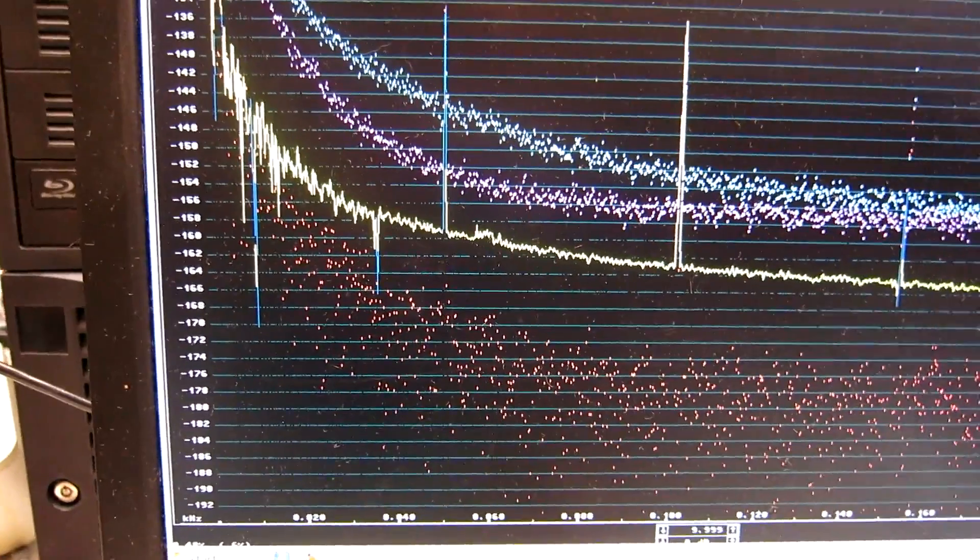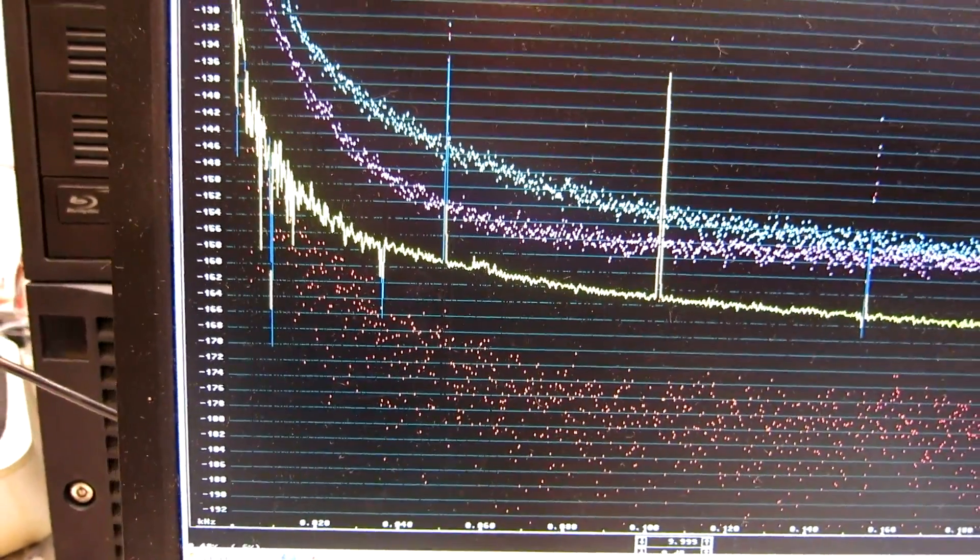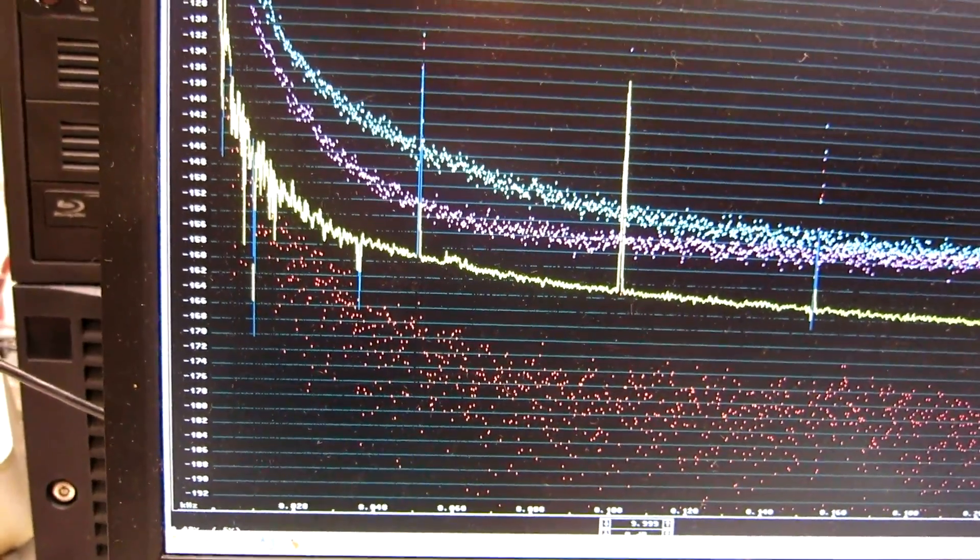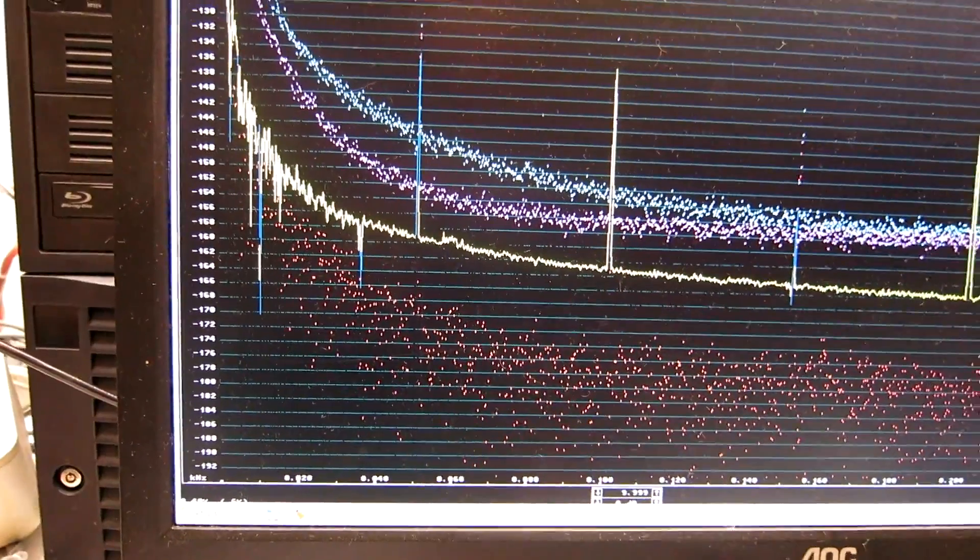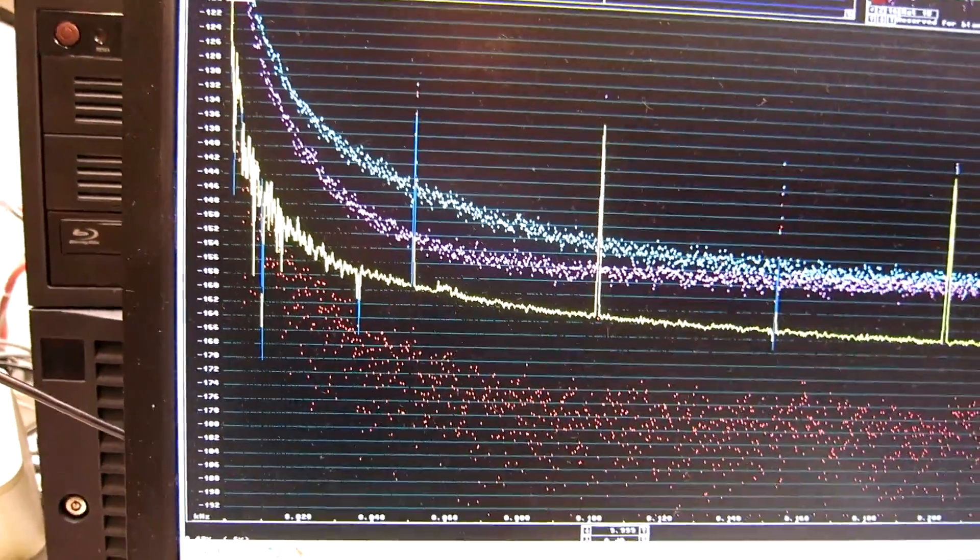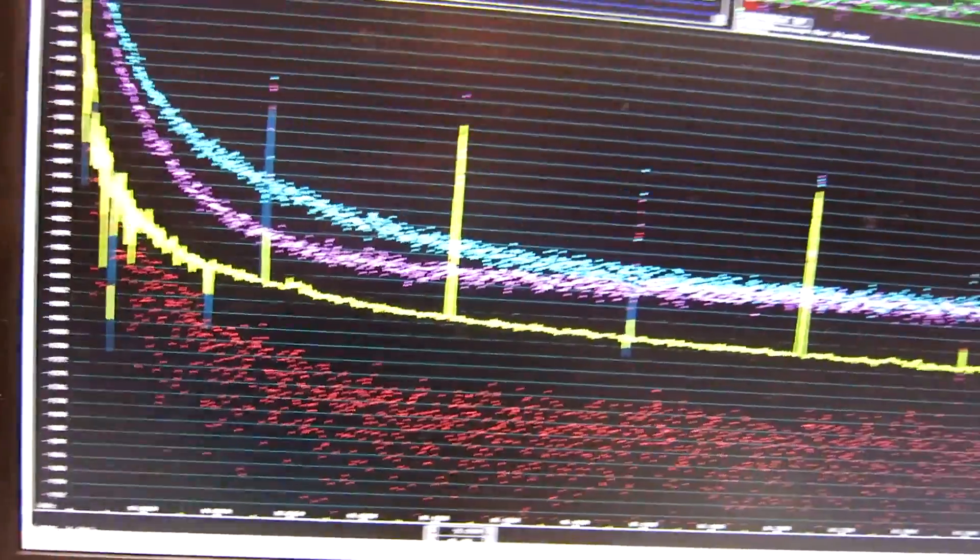The red curve is the new oscillator. The blue is the old one. And there is a significant difference. I am now measuring the Wenzel oscillator.